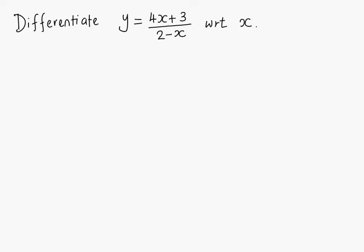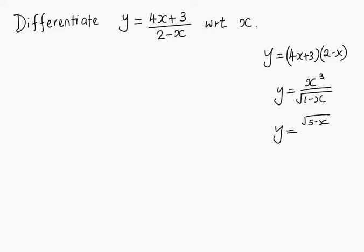How to differentiate y equals 4x plus 3 divided by 2 minus x. This involves division or quotient of two functions. In the last lesson, we looked at differentiation of the product of two functions such as 4x plus 3 multiplied by 2 minus x. Now we're going to look at how to differentiate functions that involve division, such as x cubed over square root of 1 minus x, or square root of 5 minus x over 1 plus 3x.